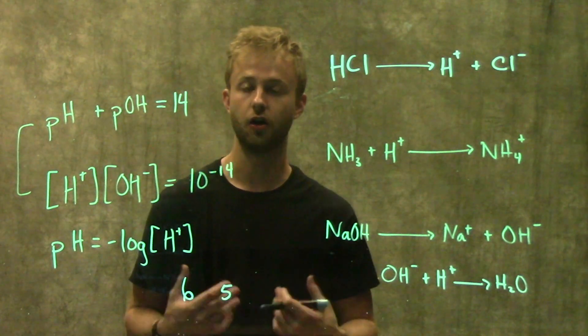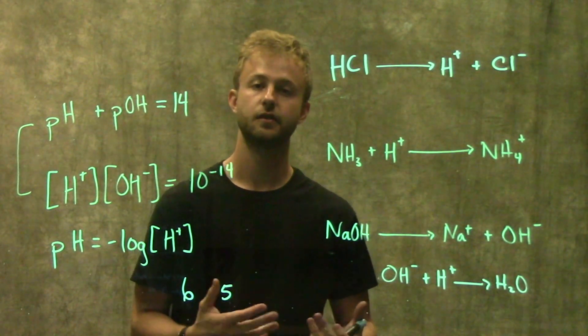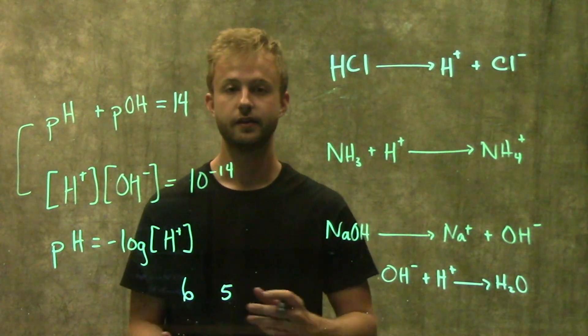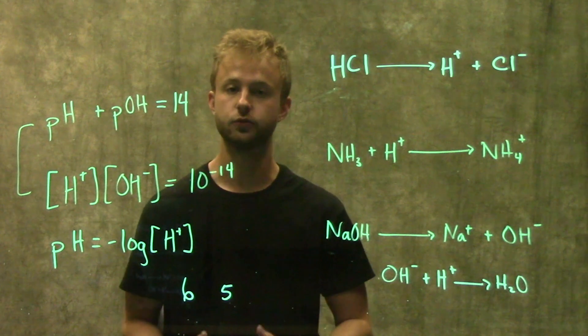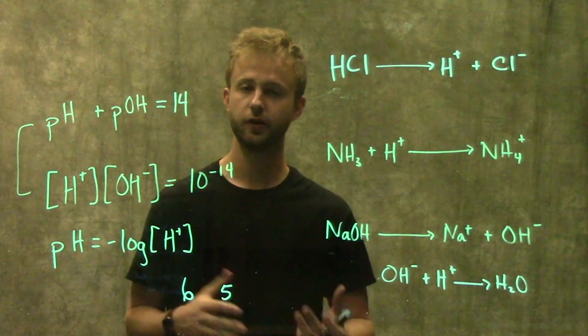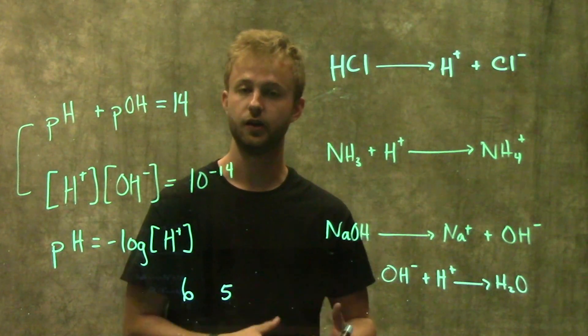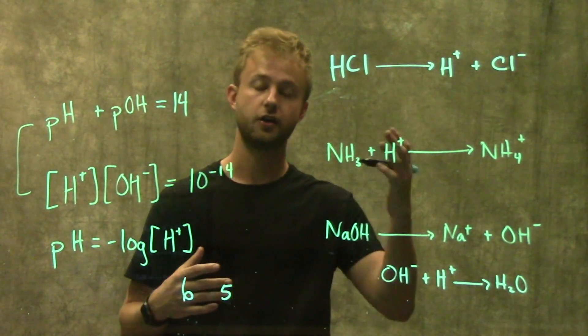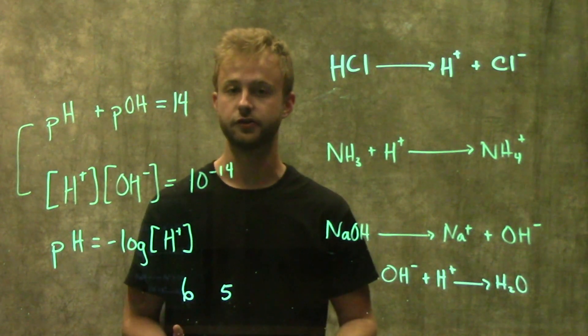This is really important in our own bodies, in our blood. We have a buffer system called the carbonic acid buffer system in our blood that helps to keep our blood at a normal pH and to help maintain homeostasis within our bodies. Buffers are important for all sorts of different chemical processes and biological processes.